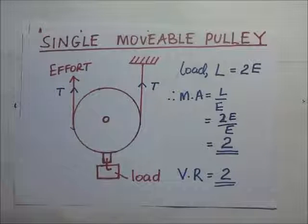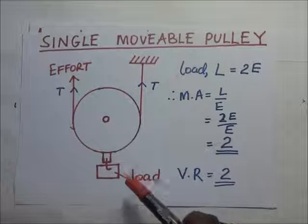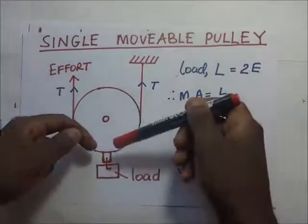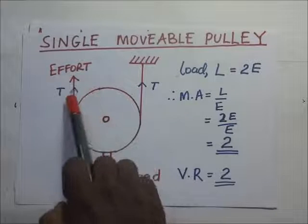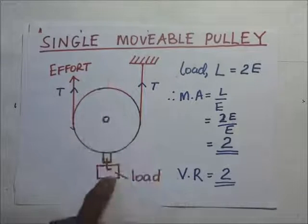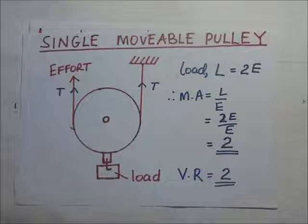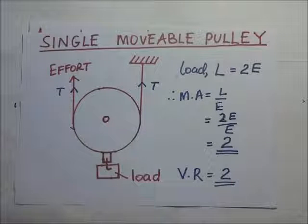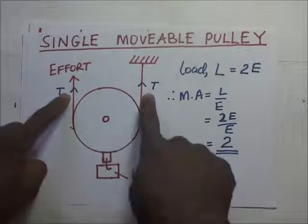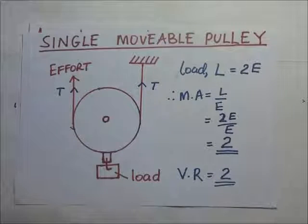Now if you look at this closely, you realize that this load, as it is acting downwards, these two ropes are supporting this pulley, and so they are experiencing tension moving up. The load is being supported by these two ropes. And the tension in each rope is equal to the effort being applied.